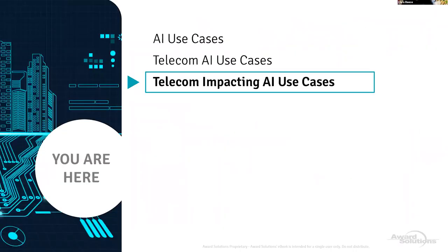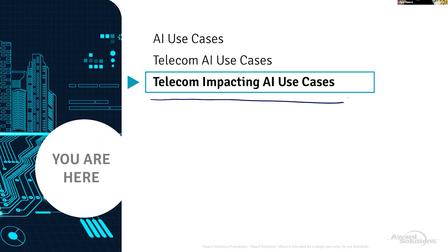We've talked a little about AI use cases within the telecom industry. Now I want to shift gears and talk about what I refer to as telecom-impacting AI use cases. This isn't a use case that a service provider will implement — not like optimizing a 5G core or network assurance or security and fraud management. This is more of a service outside of the telecom operator that will have a big impact on the telecom operator. The first one of my favorites is autonomous driving.